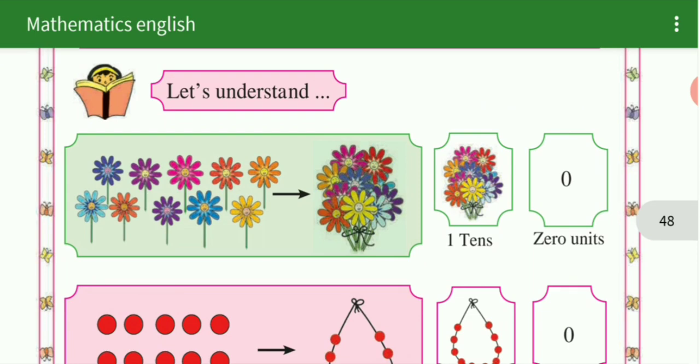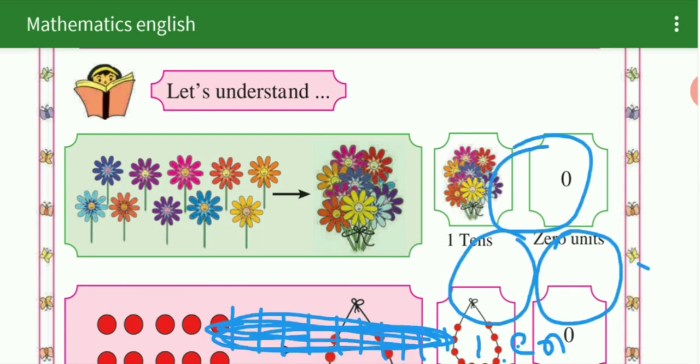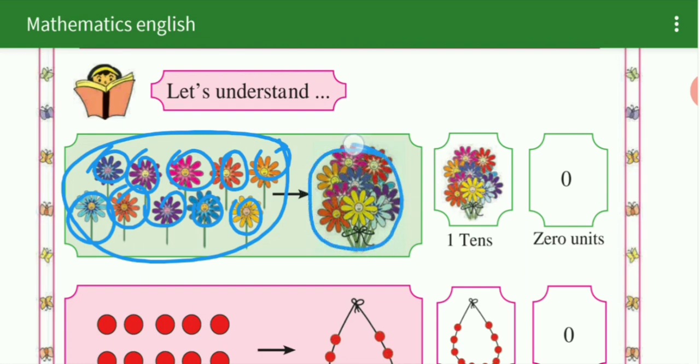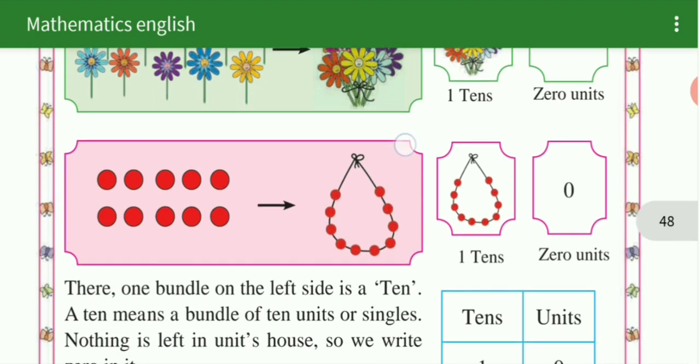Let's understand, see here, 10 flowers, single 10 flowers means single 10 units. See here, single 10 units, but when it becomes a bundle, it becomes tens. How much are they? Tens, and how much are they? 0. 1 ten, and how much are they? 0.